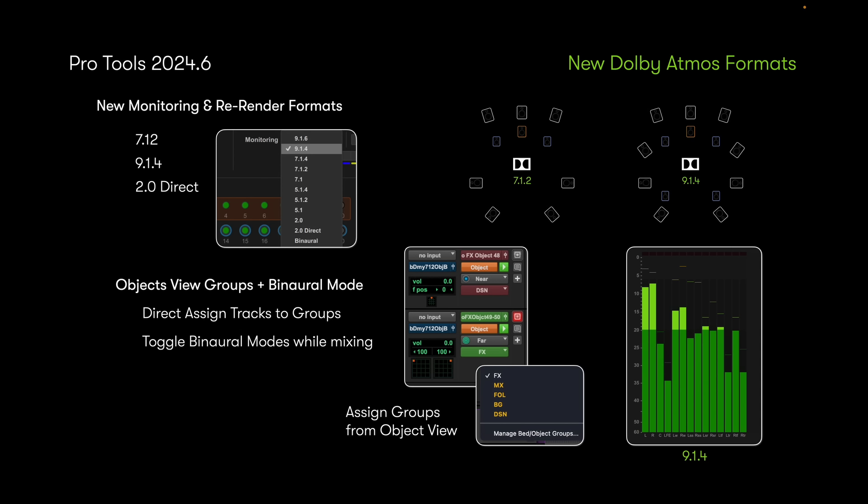Some of the most important new things right off the bat are new monitoring and re-render formats. In Pro Tools 2024.6 you're able to access a 7.1.2 format, 9.1.4, and a Stereo Direct. Stereo Direct is probably the coolest new feature. You also have new object and binaural mode views where you can toggle your object groups and binaural mode directly on the track — in both the edit and mix window — while the transport is rolling. It's a very cool new tool.